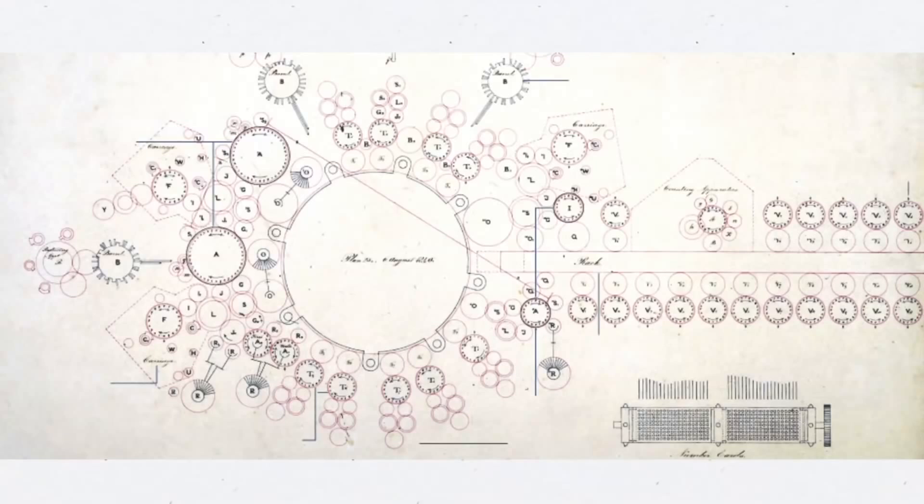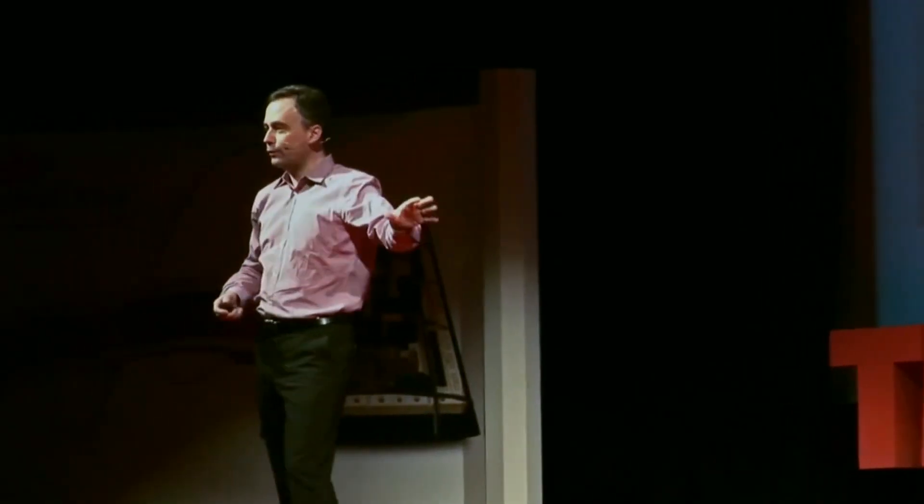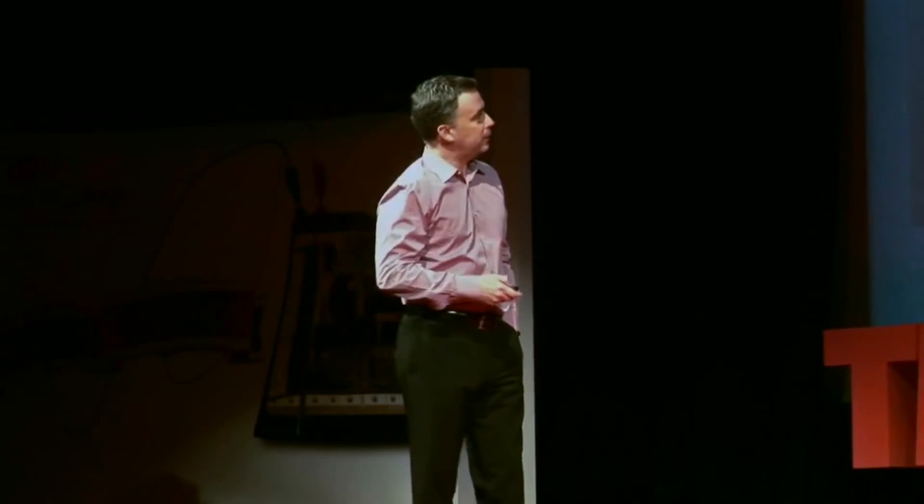The thing he designed was this monstrosity here, the analytical engine. Now, just to give you an idea of this, this is a view from above. Every one of these circles is a cog, a stack of cogs, and this thing is as big as a steam locomotive. So as I go through this talk, I want you to imagine this gigantic machine. We heard those wonderful sounds of what this thing would have sounded like. And I'm going to take you through the architecture of this machine, that's why it's computer architecture, and tell you about this machine, which is a computer.